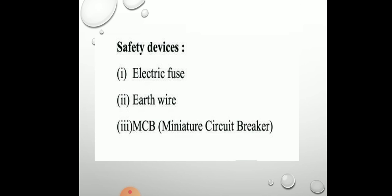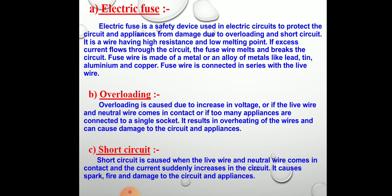The safety devices we have learnt are: electric fuse, earth wire, and miniature circuit breaker. Electric fuse is a safety device used in the electric circuit to protect the circuit and appliances from damage due to overloading and short circuit. It is a wire having high resistance and low melting point — if excess current flows, the fuse wire melts and breaks the circuit. The fuse wire is made of a metal or alloy such as lead-tin, aluminum, or copper. The fuse wire is connected in series with the live wire.